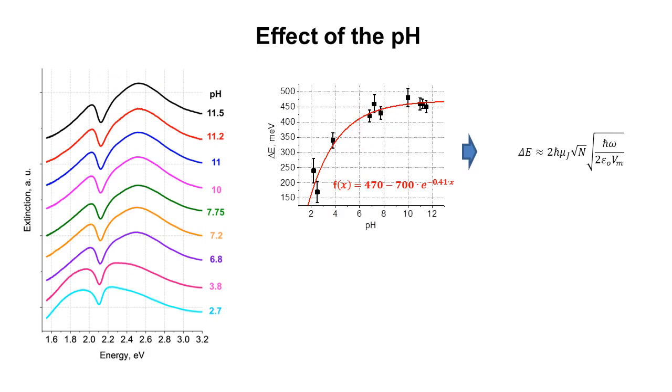The top right graph shows that the reduction of pH led to a decrease of the Rabi splitting energy from approximately 450 meV at the pH range from 8 to 11 to about 200 meV at pH of 2. It can be seen that the change in the splitting with a decrease in the pH value from 11 to 8 was very weak, but the change from 7 to 2 was very strong.